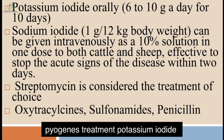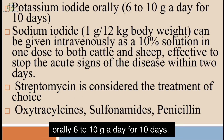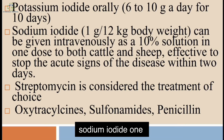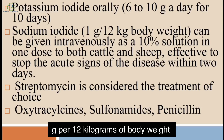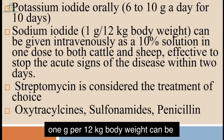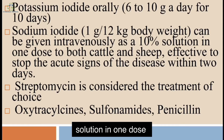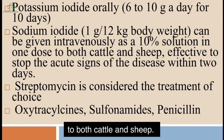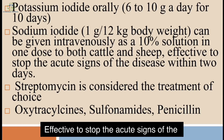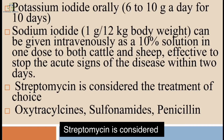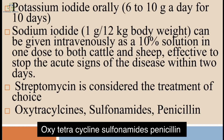Treatment: potassium iodide orally at 6 to 10 grams per day for 10 days; sodium iodide at 1 gram per 12 kg body weight can be given intravenously as a 10 percent solution in one dose to both cattle and sheep, and is effective to stop the acute signs of the disease within two days. Oxytetracycline, sulfonamides, and penicillin are also used; penicillin is considered the treatment of choice.